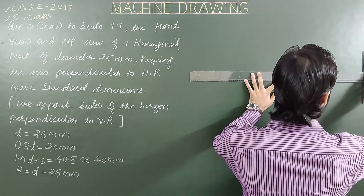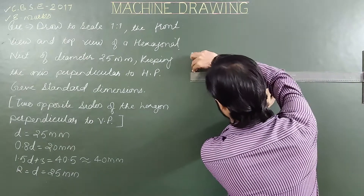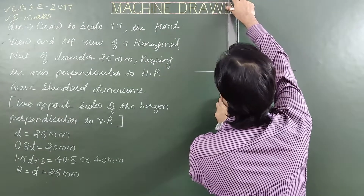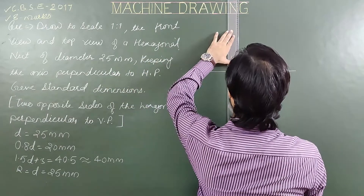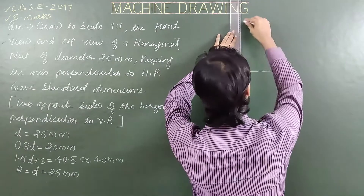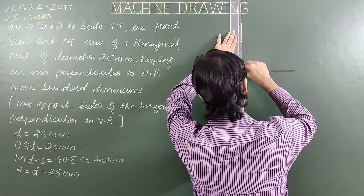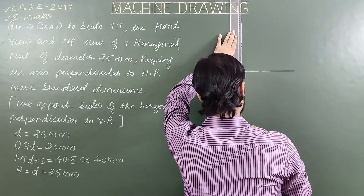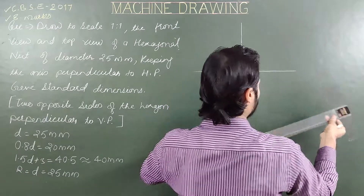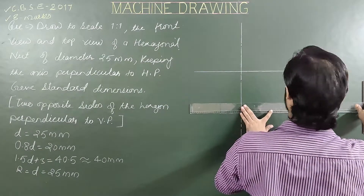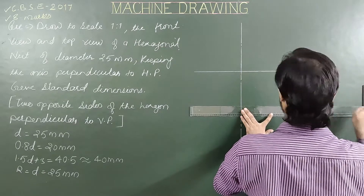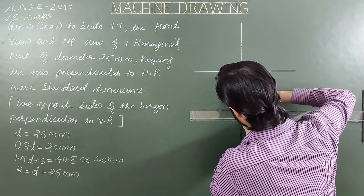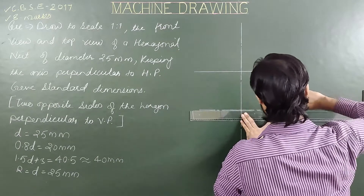Draw a vertical line because the axis is perpendicular to HP. So draw the vertical axis of the hexagonal nut. Then draw another line parallel to XY representing the center line.